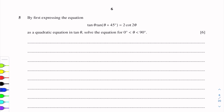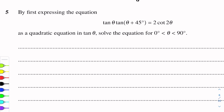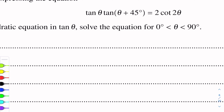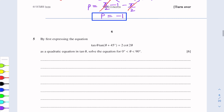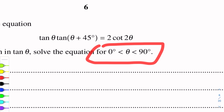Question number 5 is of trigonometry. By first expressing this equation — tan θ · tan(θ + 45°) = 2cot2θ — as a quadratic equation in tan θ, solve the equation for the interval 0 to 90 degrees.